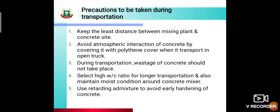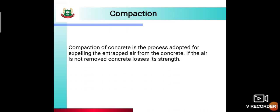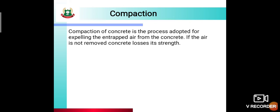The next concrete operation is compaction. Compaction of concrete is a process adopted for expelling the entrapped air from the concrete. We do compaction because the air voids present in the concrete should be expelled. If they are not expelled, after hardening the concrete will develop honeycombs, which will affect the strength of the concrete. Therefore after placing, we give compaction to the concrete. If the air is not removed, concrete loses its strength, which is not good for any structure.